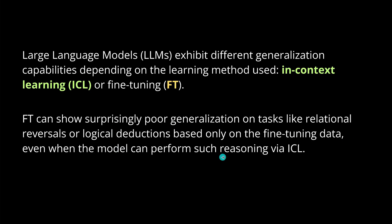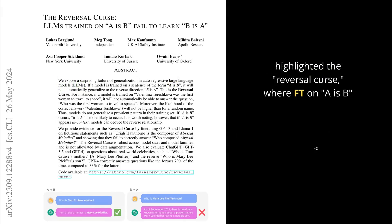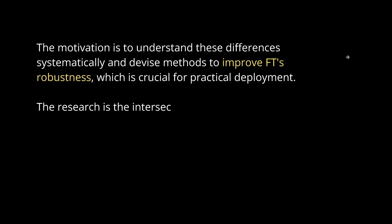Just go bit by bit by bit, leading here to failures on simple variations like a reversal. This means we have a perfect overfitting to the surface form of logic or directionality. I think it's fascinating, though, that the same LLM can exhibit different generalization capabilities depending on the learning methodology. Either we go with ICL or with fine-tuning. And unfortunately, fine-tuning shows surprisingly poor generalization on tasks like relational reversals or logical deductions, based only on the fine-tuning data. Even when a model can perform such reasoning, the very same LLM can do this in ICL.